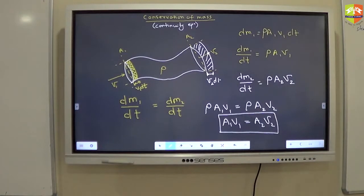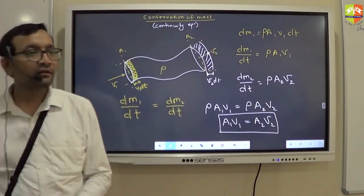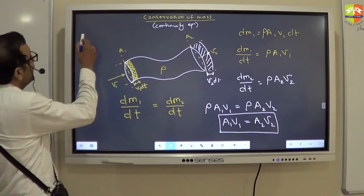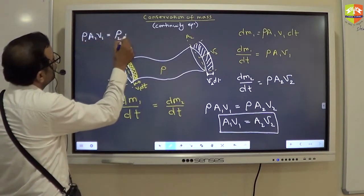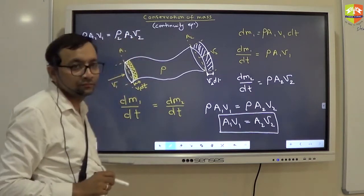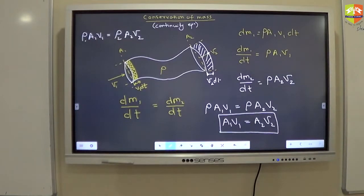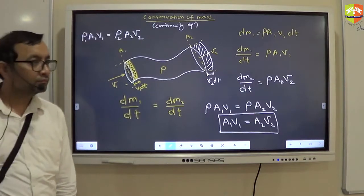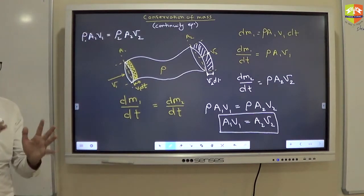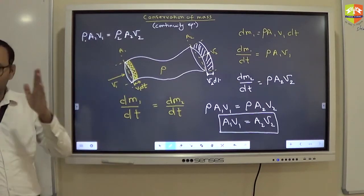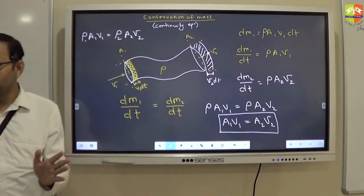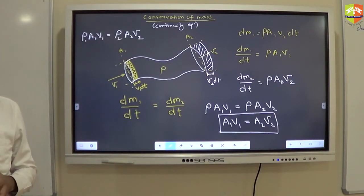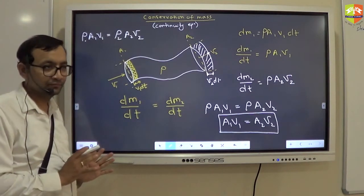And what if the fluid is compressible? Then? Density will change. So, the continuity equation will become rho 1 A1 V1 is equal to rho 2 A2 V2. If you are taking a compressible fluid, then rho 1 A1 V1 is equal to rho 2 A2 V2. Any kind of flow. Conservation of mass is valid for any kind of flow. Do you think conservation of mass depends on what kind of flow it is? No, right? It should not. Any doubt? So this is continuity equation.